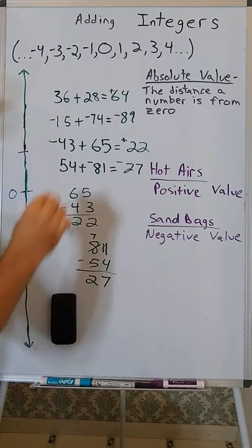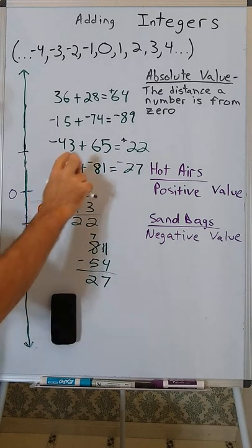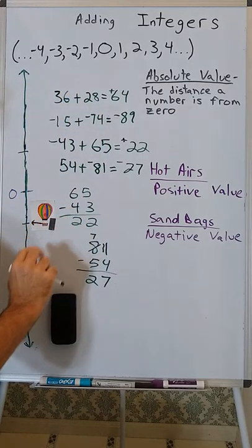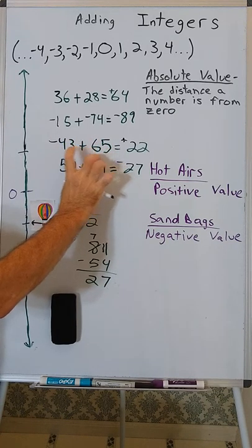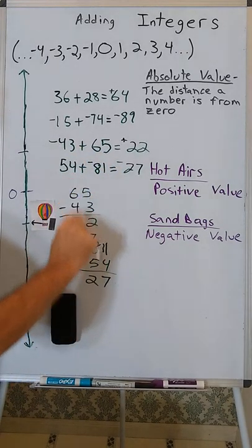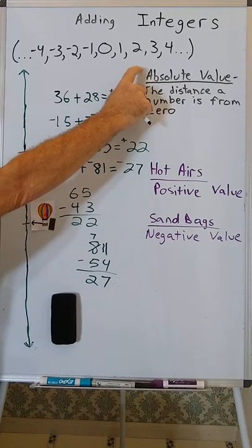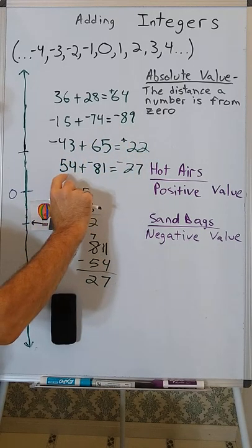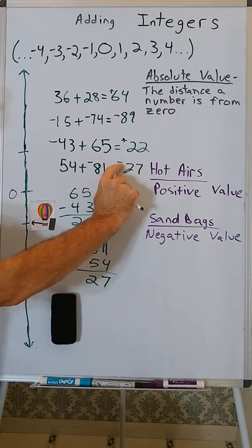In the cases where we're adding a negative and a positive, the order doesn't matter in addition. Since the balloon is going down and up, we have to think: is it going up more or down more? Because the sandbags and hot airs make the balloon go in different directions, we subtract the distances from zero — we subtract the absolute values. Then we use the sign of the number further from zero, the one with the greatest absolute value. If that number is positive, the result is positive; if it's negative, the sum is negative.